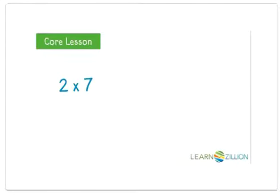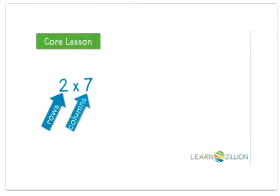What would the array look like for the expression two times seven? The first number in a multiplication expression shows the rows — there are two rows. The second number shows the columns, so there are seven columns. Two rows and seven columns.